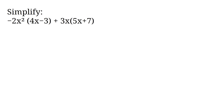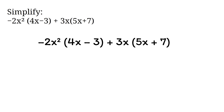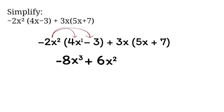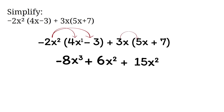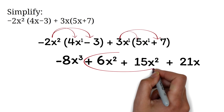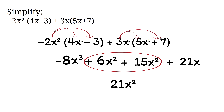Simplify negative 2x squared times (4x minus 3) plus 3x times (5x plus 7). We will first distribute the negative 2x squared and the 3x. Negative 2x squared times 4x: multiply the numbers — negative 2 times 4 is negative 8 — then add the exponents of x: 2 plus 1 gives x cubed, so negative 8x cubed. Negative 2x squared times minus 3 is positive 6x squared. Then 3x times 5x is 15x squared, and 3x times 7 is 21x. Combining like terms: 6x squared plus 15x squared is 21x squared. So the final answer is negative 8x cubed plus 21x squared plus 21x.